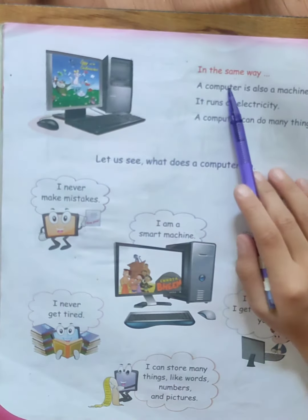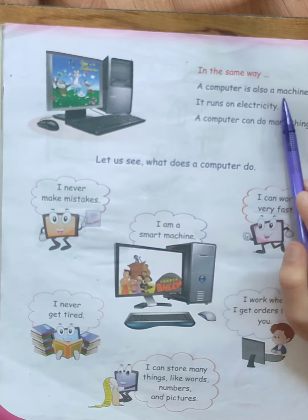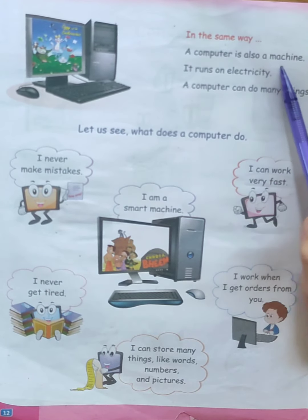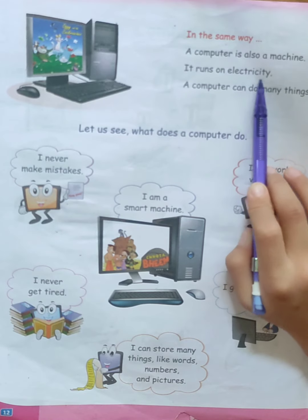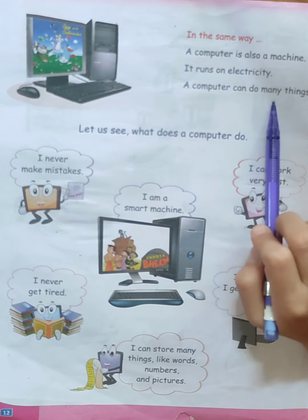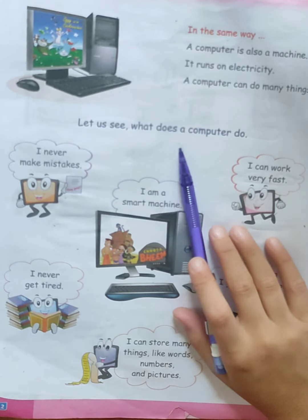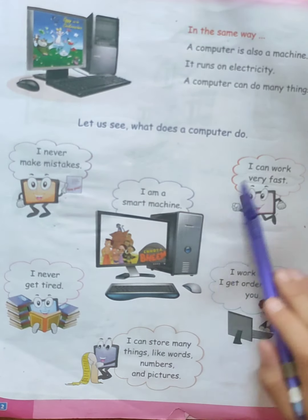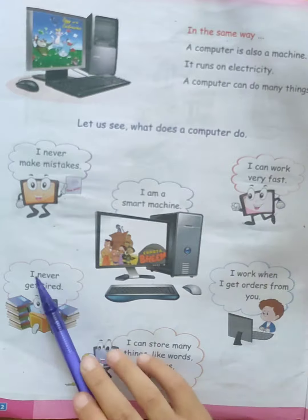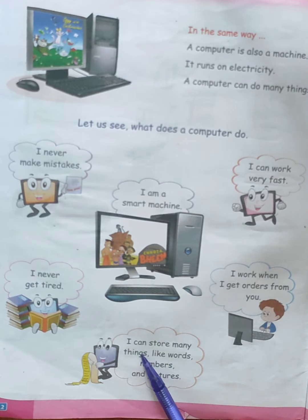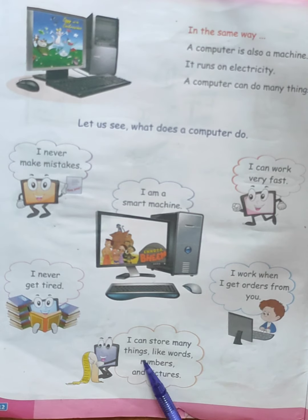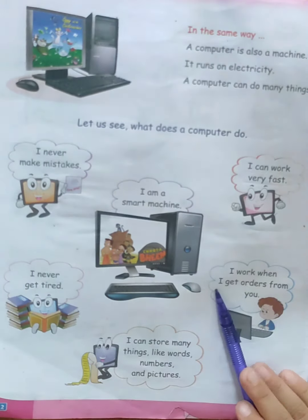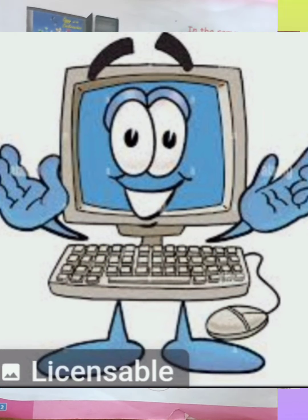In the same way, a computer is also a machine. It runs on electricity and can do many things. A computer never makes mistakes. It is a smart machine that can work very fast and never gets tired. It can store many things — like words, numbers, and pictures. It works when it gets orders from you.